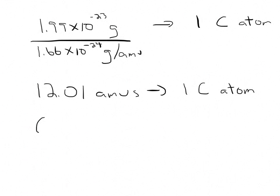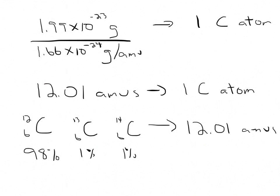And all carbon atoms have different isotopes. Well, sorry. There are several different isotopes of carbon atoms. For example, there is carbon-12, there is carbon-13, and there is carbon-14. So these isotopes all occur, but they occur in different amounts. Ninety-eight percent, give or take, one percent, give or take, and one percent, give or take. So that averages out to an average mass of 12.01 amu's.